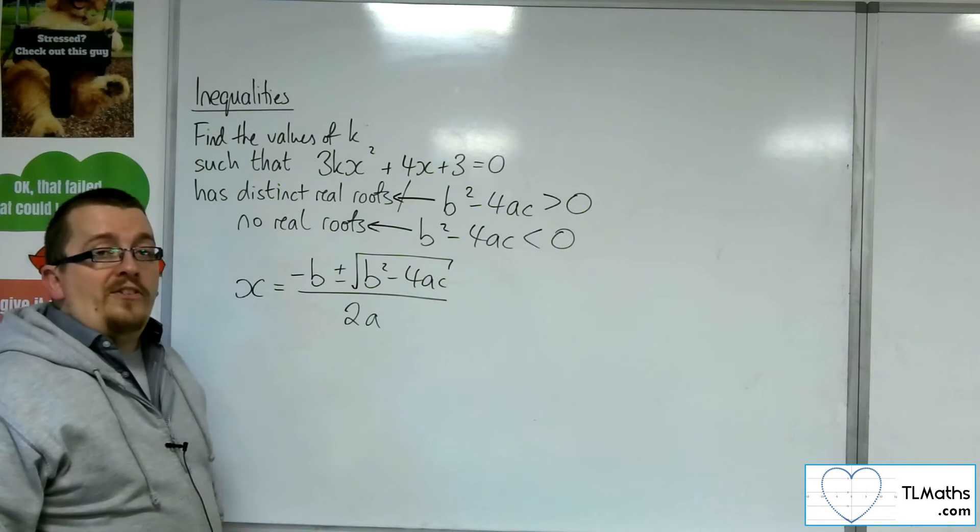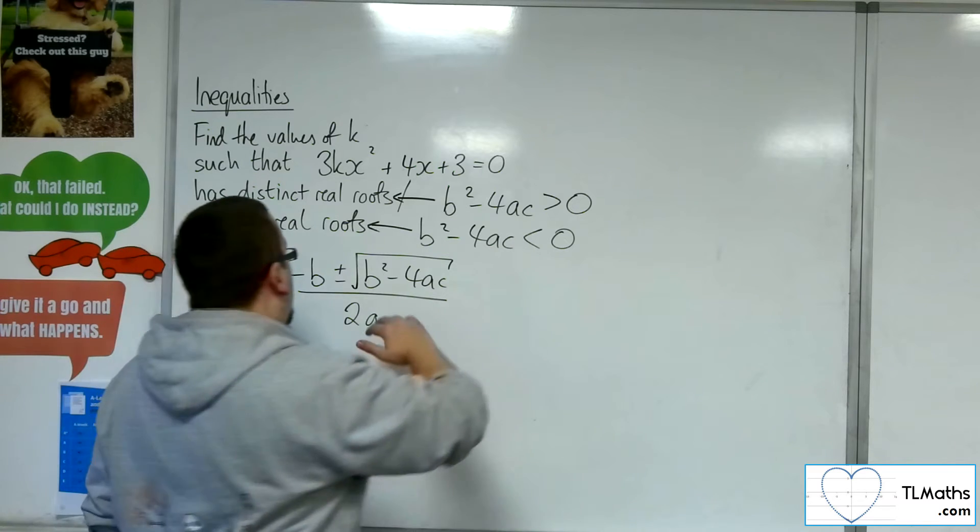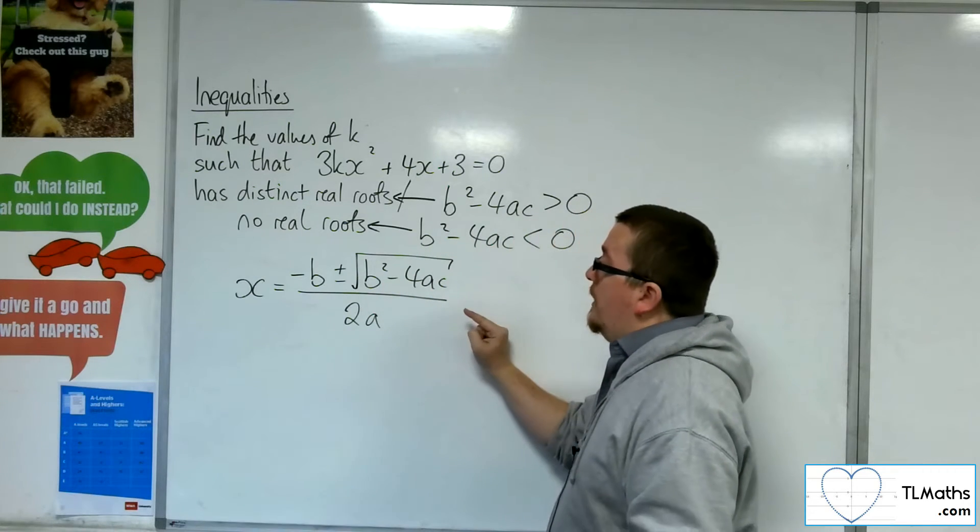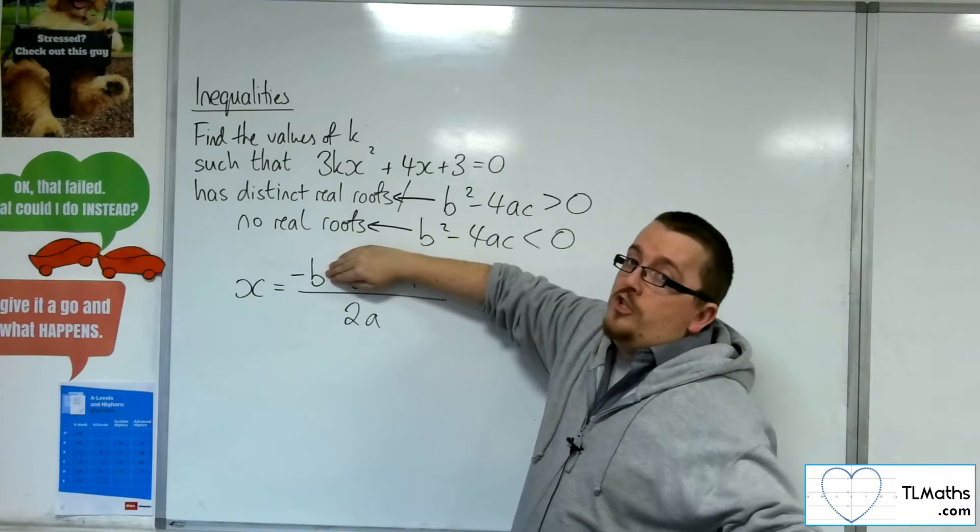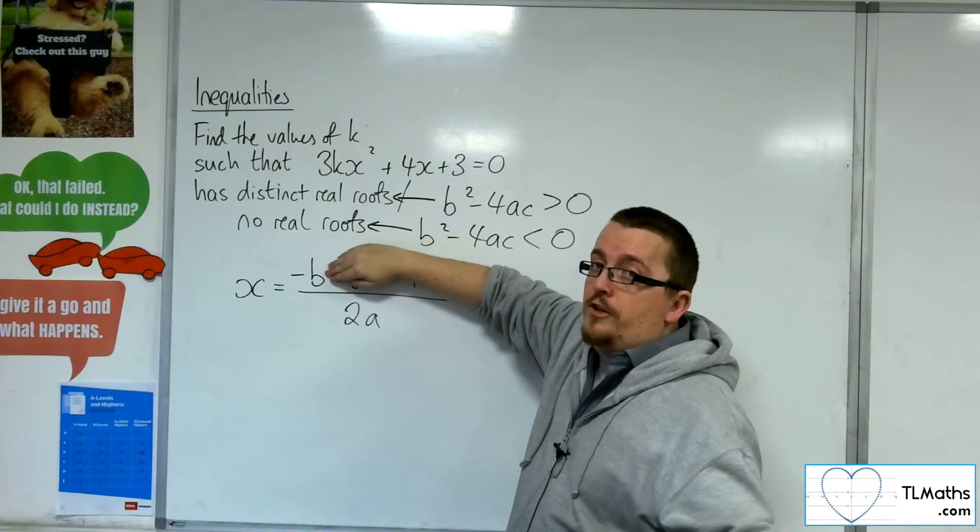If the b squared minus 4ac is equal to 0, then the square root of 0 is 0, and then I get minus b over 2a, which is just one repeated real root.